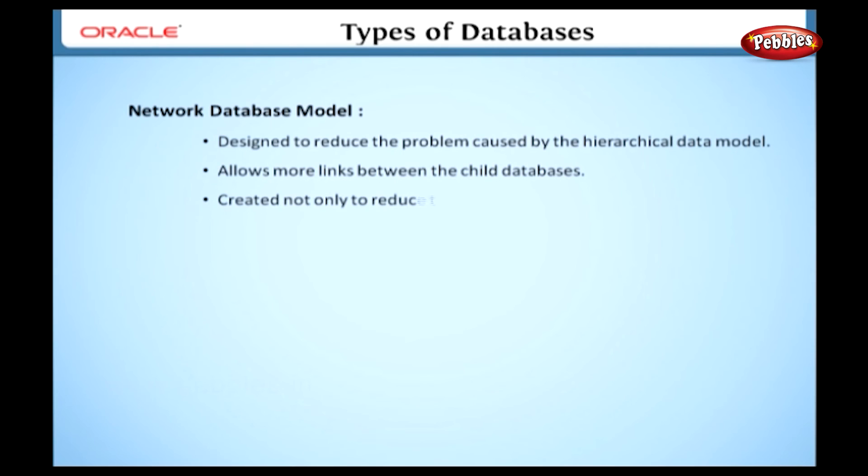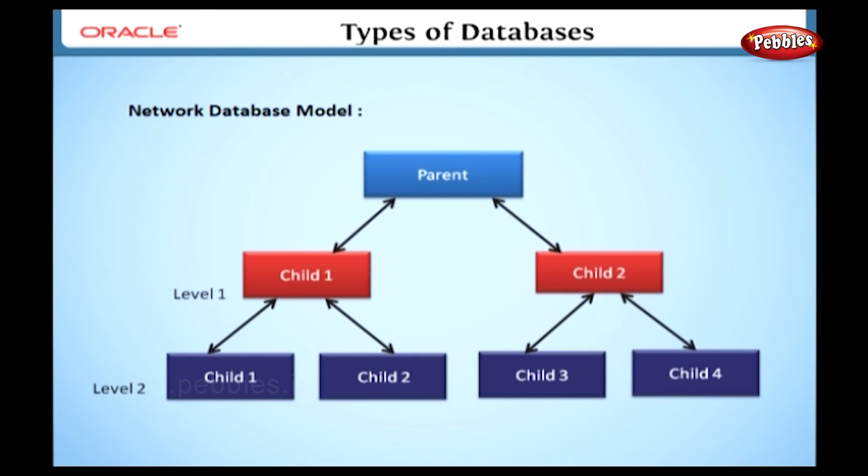It was created not only to reduce the chance of redundant data, but also to make searching for data much easier. As shown in this figure of the network model, a child database can have more than one parent.